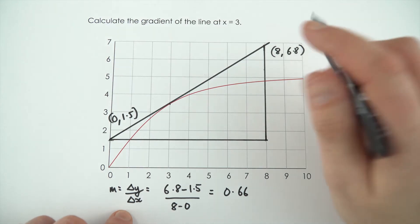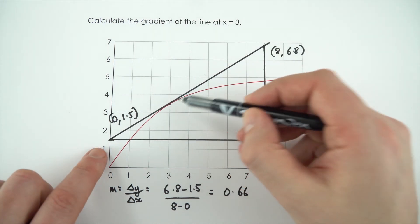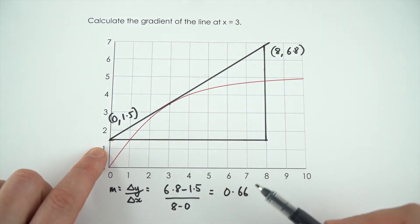So for something like this, at this point when x is equal to 3, the gradient of this line is 0.66.